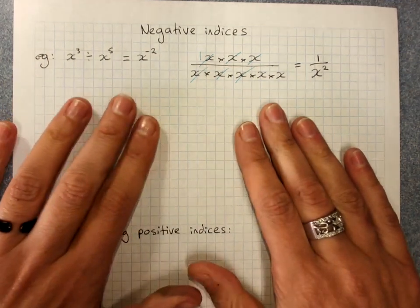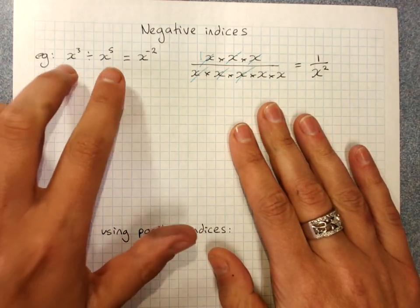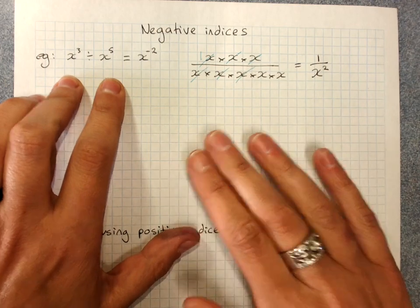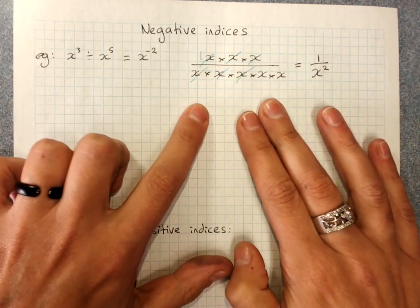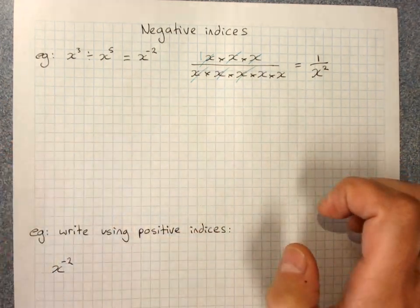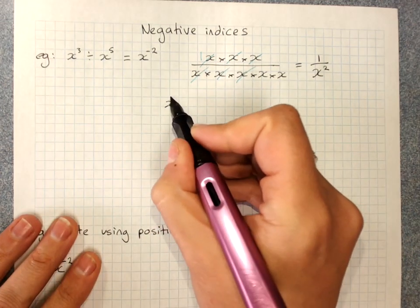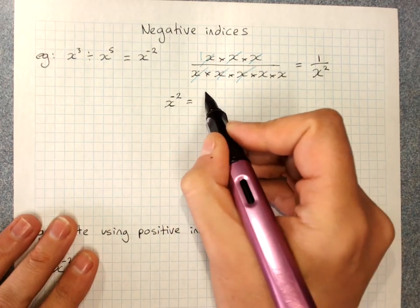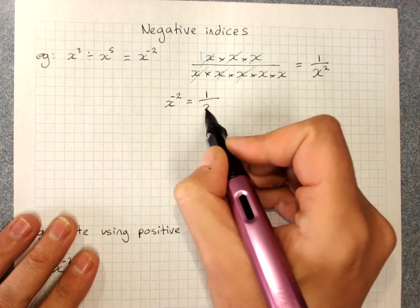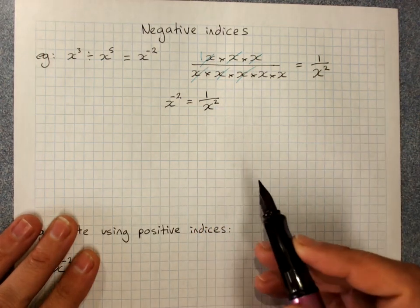These are both perfectly acceptable ways of answering this question. One is using index laws, which we know are right. One is using expanded form, which we know is right. The only possible answer is that x to the negative 2 is the same as 1 over x to the positive 2.